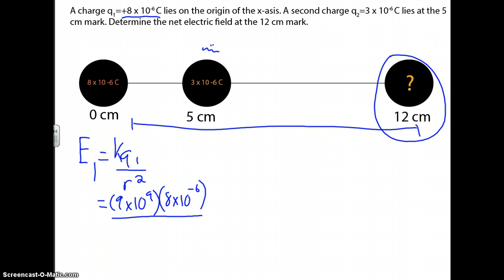But it's in centimeters, so you've got to put 0.12, and then you square it. And then, you end up getting 5 times 10 to the 6, and then newtons per coulombs.